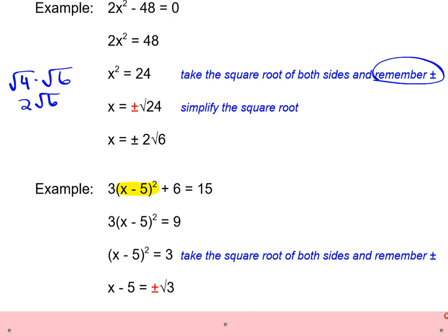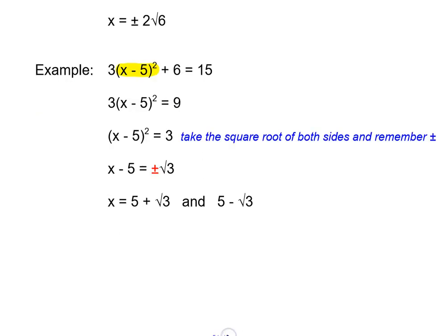We're still trying to find x, so we add 5 to both sides. And when we add 5 to both sides, we get two separate answers. So we're going to add 5 to positive the square root of 3, and we're going to add 5 to negative the square root of 3. So we get 5 + √3, and 5 - √3. And those are our two solutions for that one. We could plug it into our calculator and get decimals if we want.